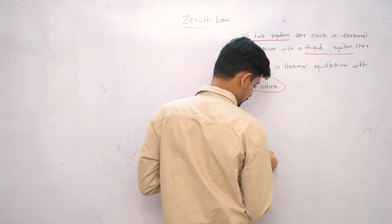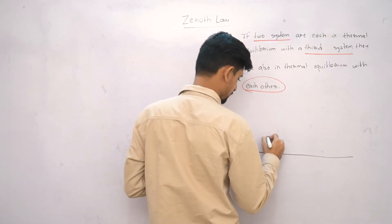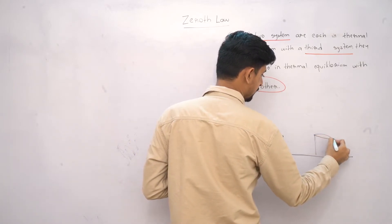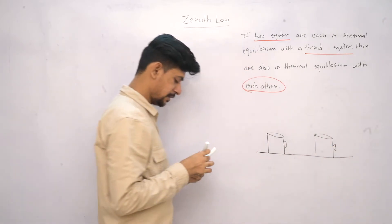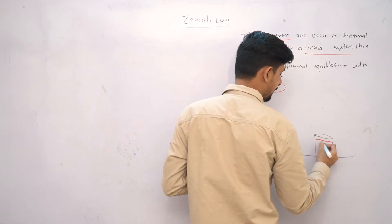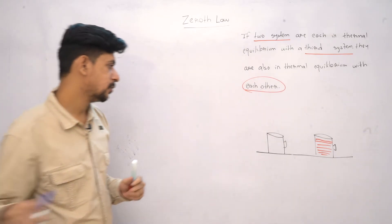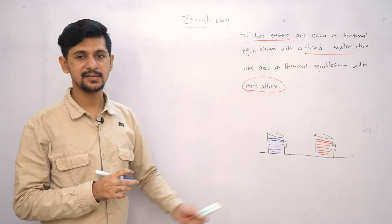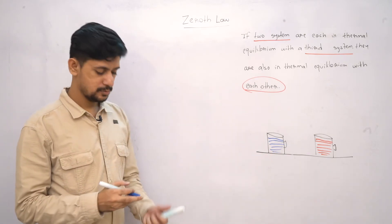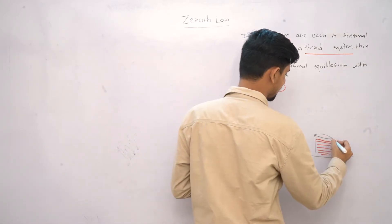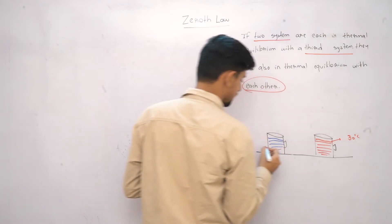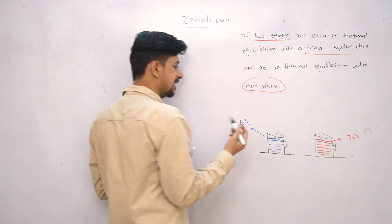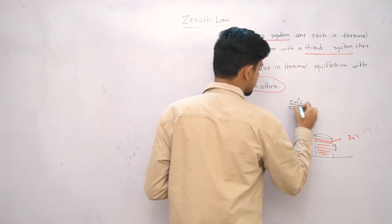Let's take a practical example to understand this even better. On a table we have two different cups, both containing coffee. The difference is one is hot coffee and the other is cold coffee — same content, same volume, everything the same; the only difference is the temperature, the amount of thermal energy each cup possesses. Let's say the temperature of the hot cup is around 30°C while the temperature of the cold one is 10°C.